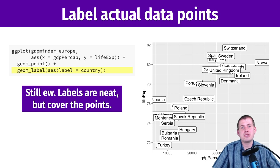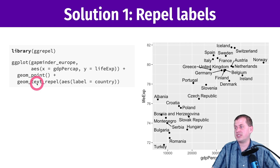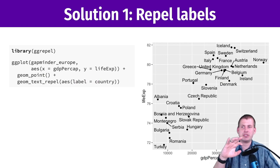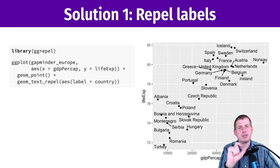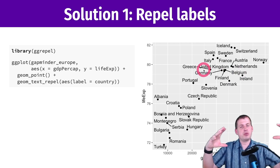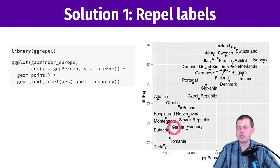One solution is to repel the labels using the gg_repel package, which gives us geom_text_repel. It works exactly like geom_text — you give it a label aesthetic — but internally it uses a fancy shuffling algorithm so text labels don't overlap. Where Greece, Finland, and Belgium were crashing together, it now spreads them out and draws connecting lines if things are too far away. Greece is that point, Finland is that point, Austria is there, Serbia is down here — it's much easier to read, though still very busy.